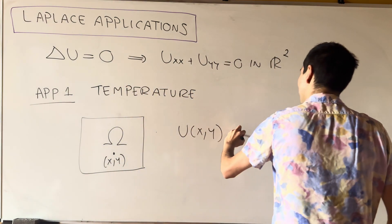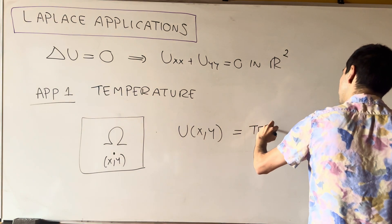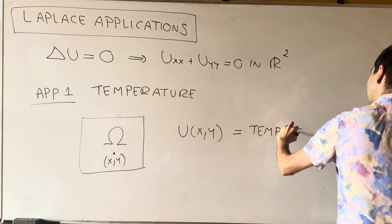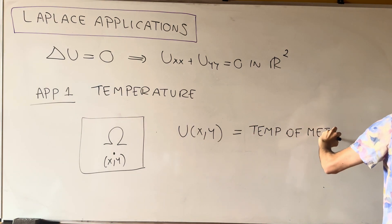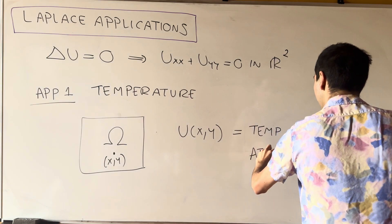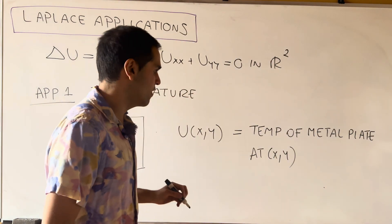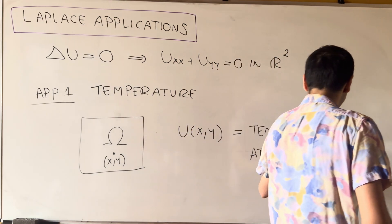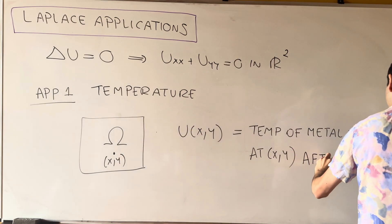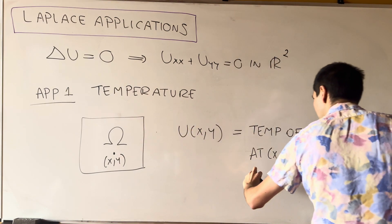So in this case, u of xy is the temperature of the metal plate at x, y, but once again, after a very long time.